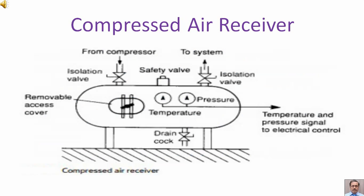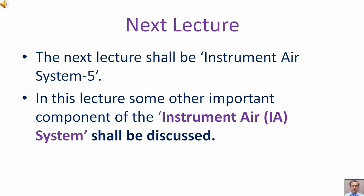This diagram shows a typical compressed air receiver. The next lecture shall be Instrument Air System Part 5, in which some other important components of the Instrument Air System shall be discussed.